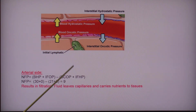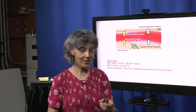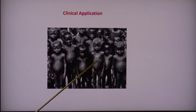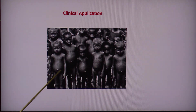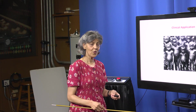In situations where this pressure becomes low — which is common when people have very low blood proteins — we see examples like young children with starvation. They are very thin, but notice the swelling in the abdomen — there is fluid in the tissues. Fluid leaves the blood and goes to the tissues because they have a very low concentration of proteins in the blood.